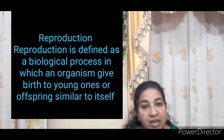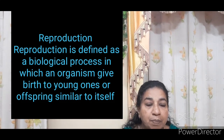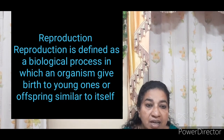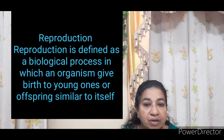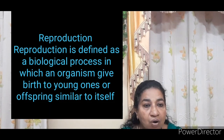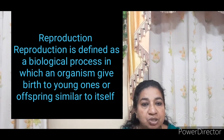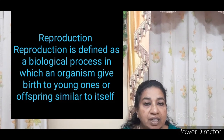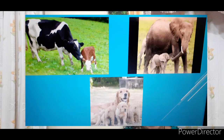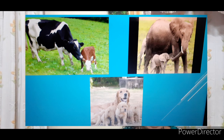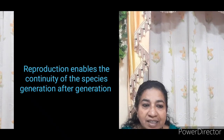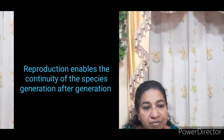Next we will discuss about reproduction. Reproduction is defined as a biological process in which an organism gives rise to young ones, or progeny, or offspring similar to itself. An organism gives birth to young ones which are similar to the parent. These young ones are growing, maturing, and again producing their own young ones. There is a cycle of birth, growth, and death. Thus, reproduction enables the continuity of the species generation after generation.